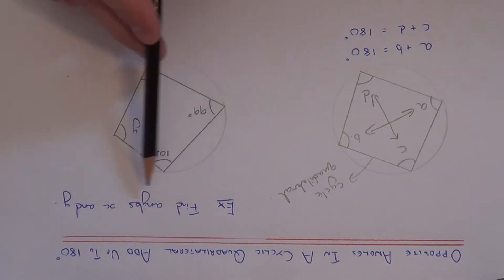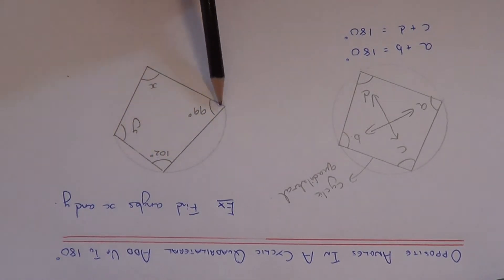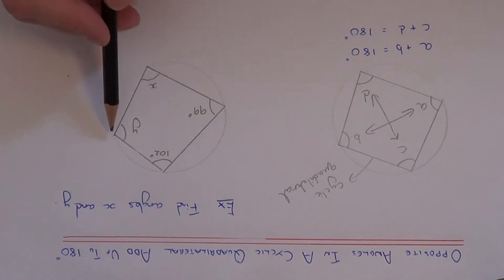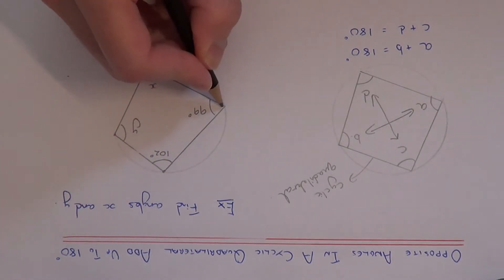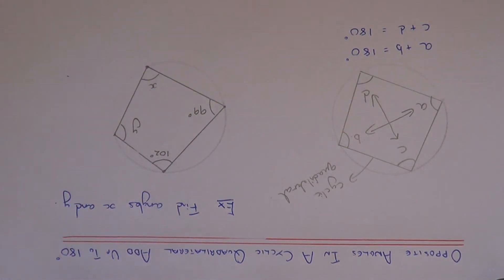So we need to work out angles X and Y. So if you notice then we have a cyclic quadrilateral, all the four corners are on the circumference of the circle. So we know X plus 102 equals 180 and Y plus 99 equals 180.